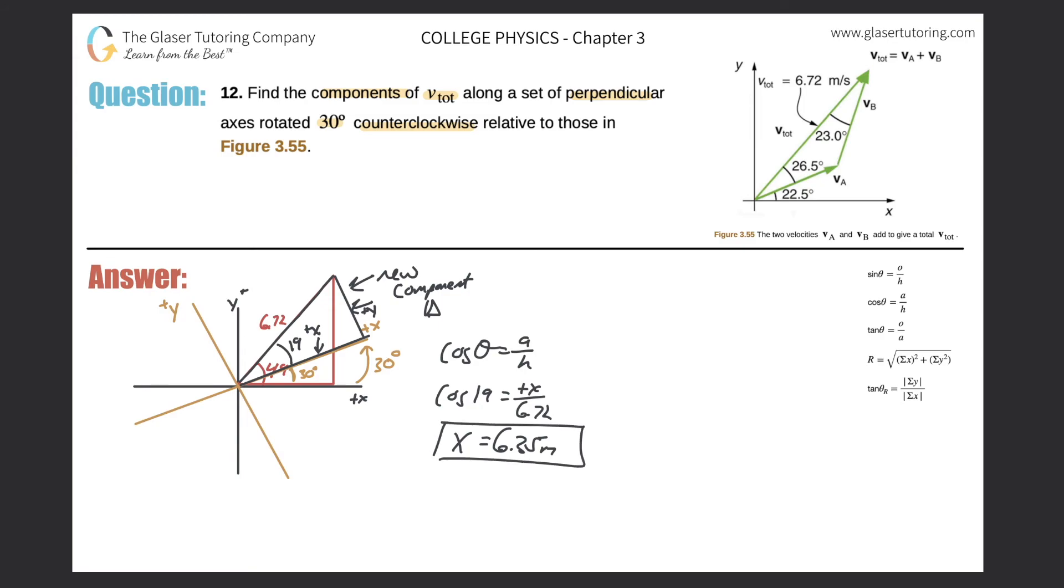Then, to find now the Y component here, remember, I know the hypotenuse. I know this angle. That is opposite of the side of interest. Therefore, I'd be using sine. So sine of theta is equal to the opposite side over the hypotenuse. Sine of now my 19 degrees is equal to the positive Y value, or Y component over 6.72. Simply do your cross multiplication. So sine of 19 times 6.72 is 2.19. So we've got a value of 2.19 meters. And that would be that.